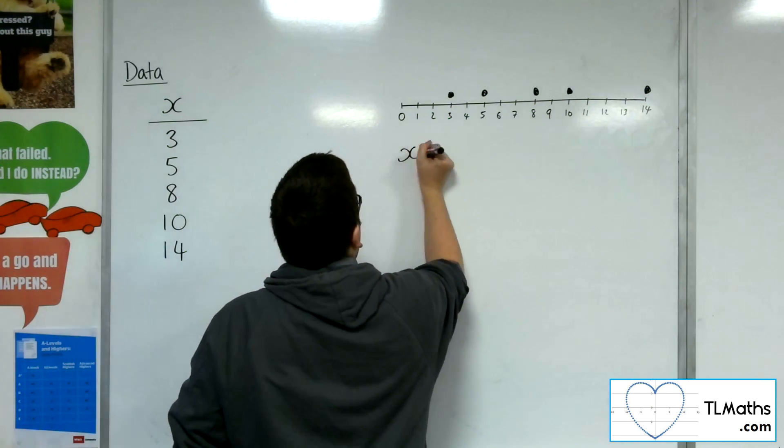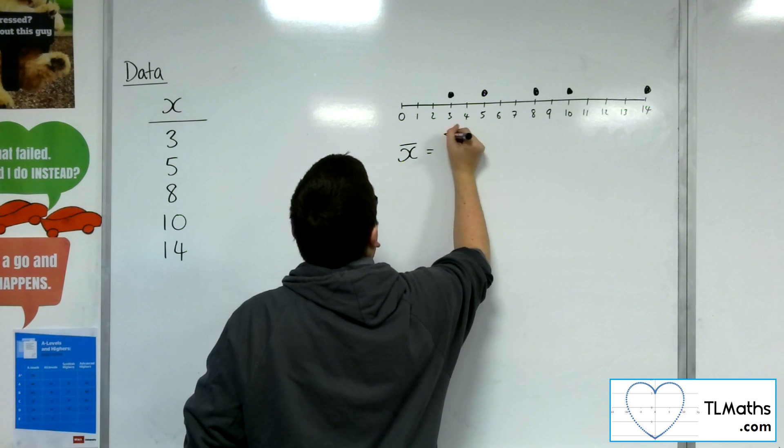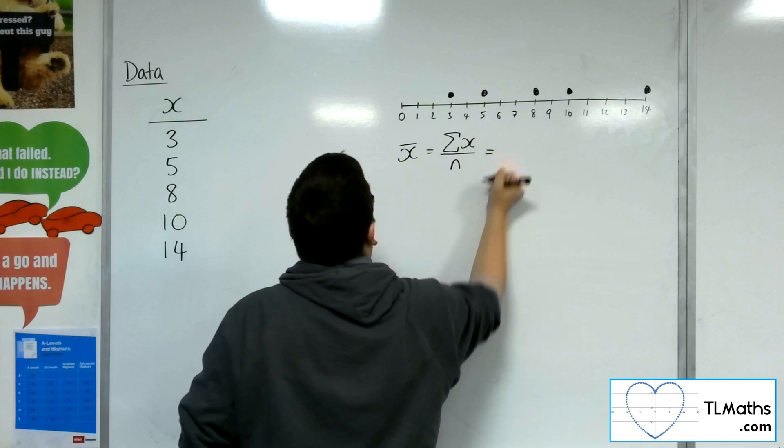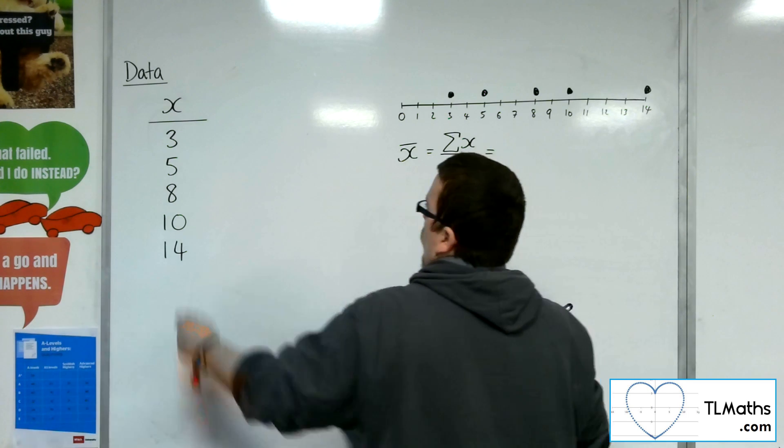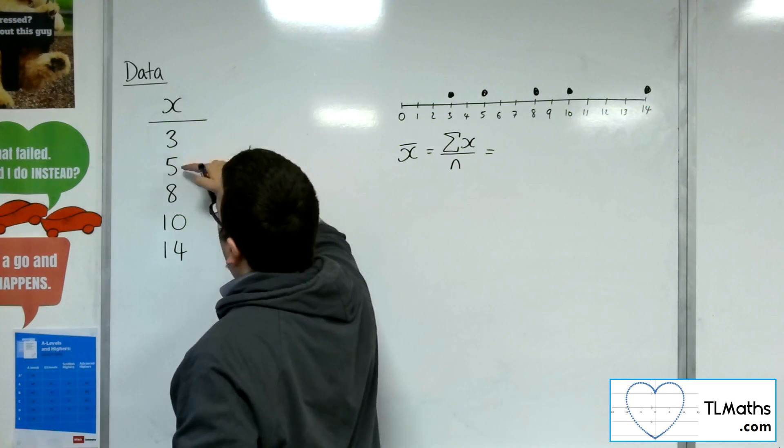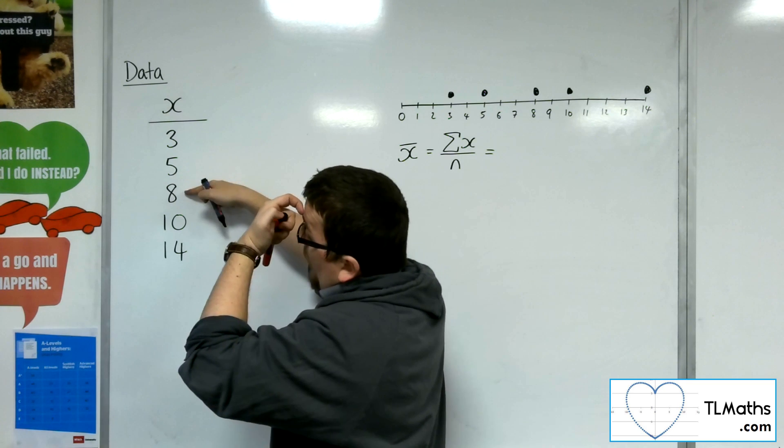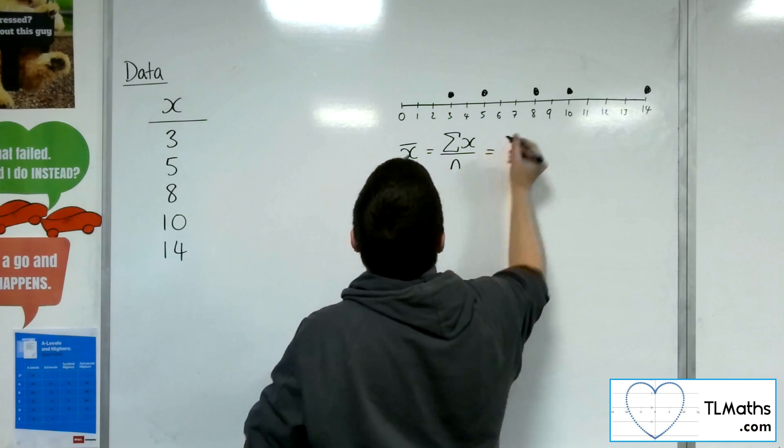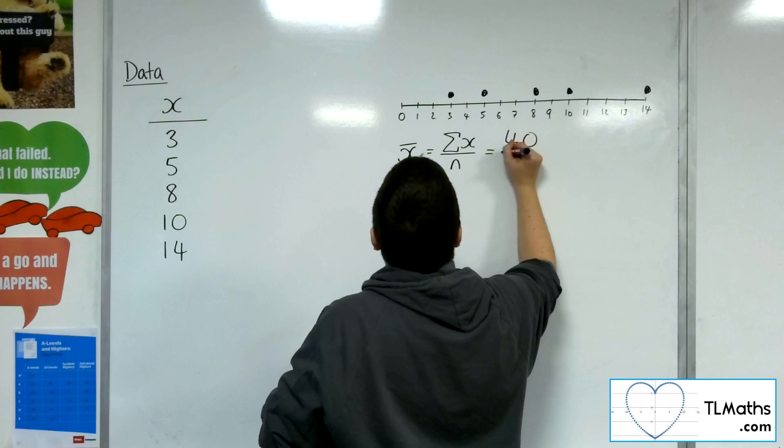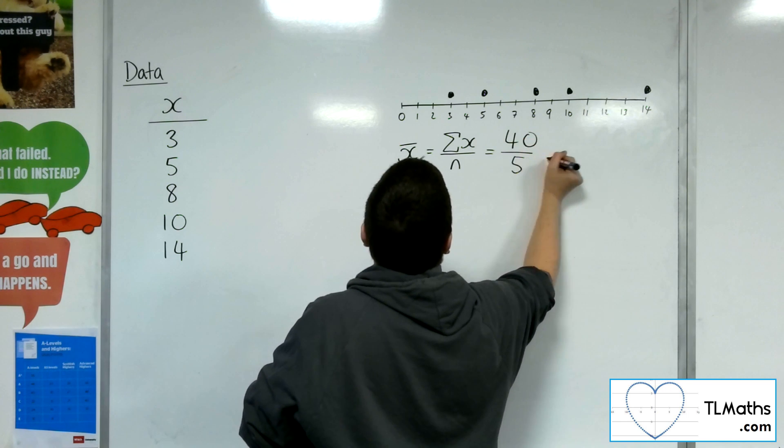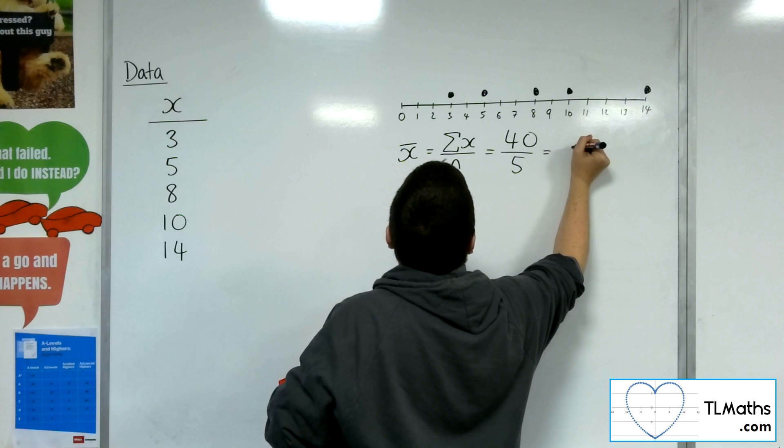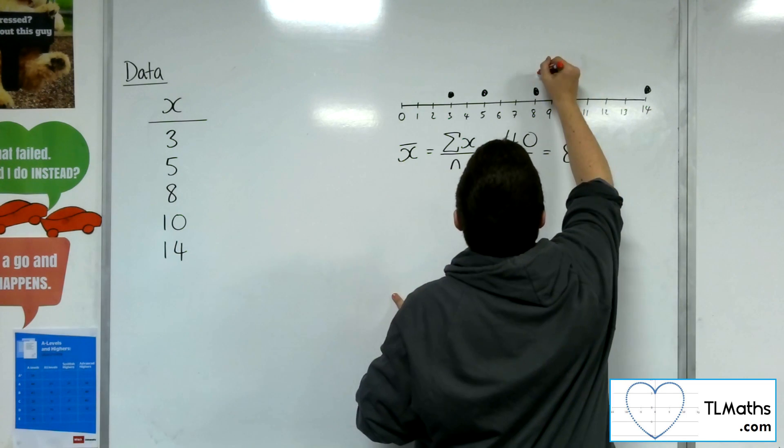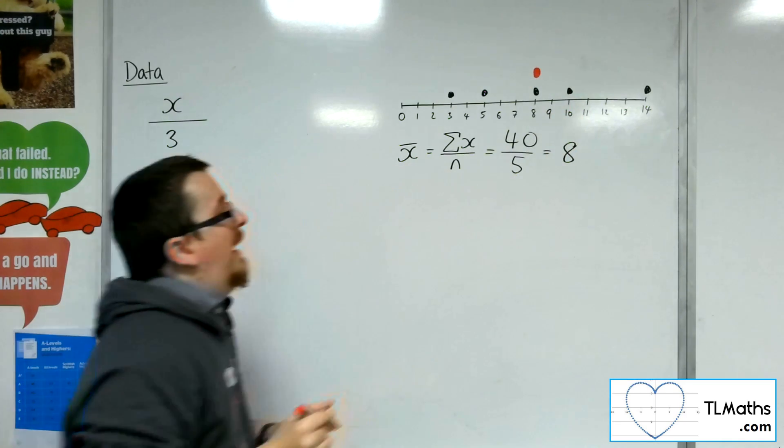So the mean will be the sum of all of the x's divided by how many there are. So I'm going to add these up. So I'm going to get 3 plus 5 is 8. 8 and 8 is 16, 26, 40. So we've got 40 as the total, and we've got 5 data points. So 40 divided by 5 is 8. So the mean value is there at 8.